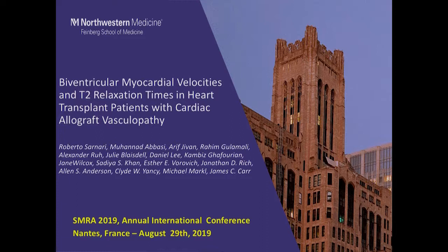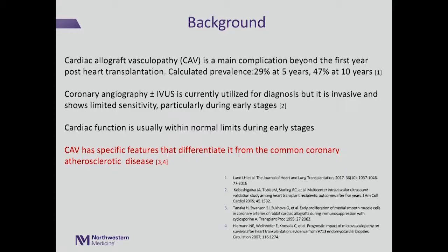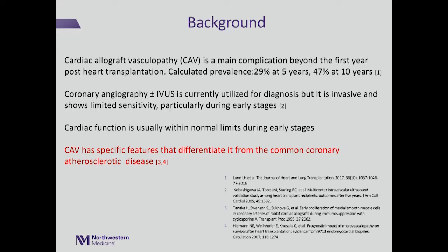A little background: cardiac allograft vasculopathy is one of the main complications post-cardiac transplant, particularly beyond the first year. Currently, the gold standard techniques are coronary angiography plus or minus IVUS analysis to diagnose and score the amount of allograft vasculopathy. CAV is not the typical coronary atherosclerotic process but a different and specific process with immunologic and non-immunologic origin.